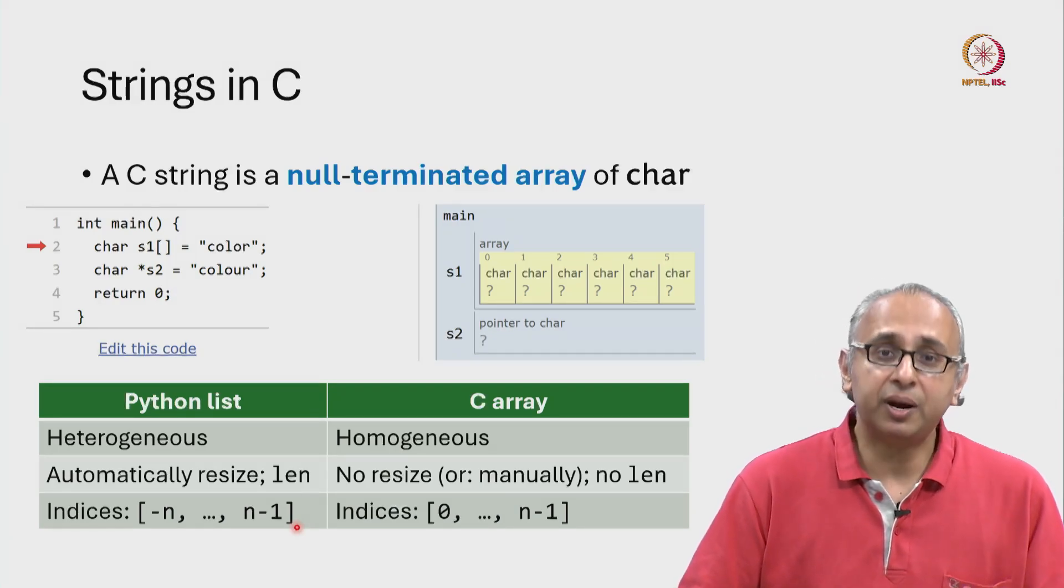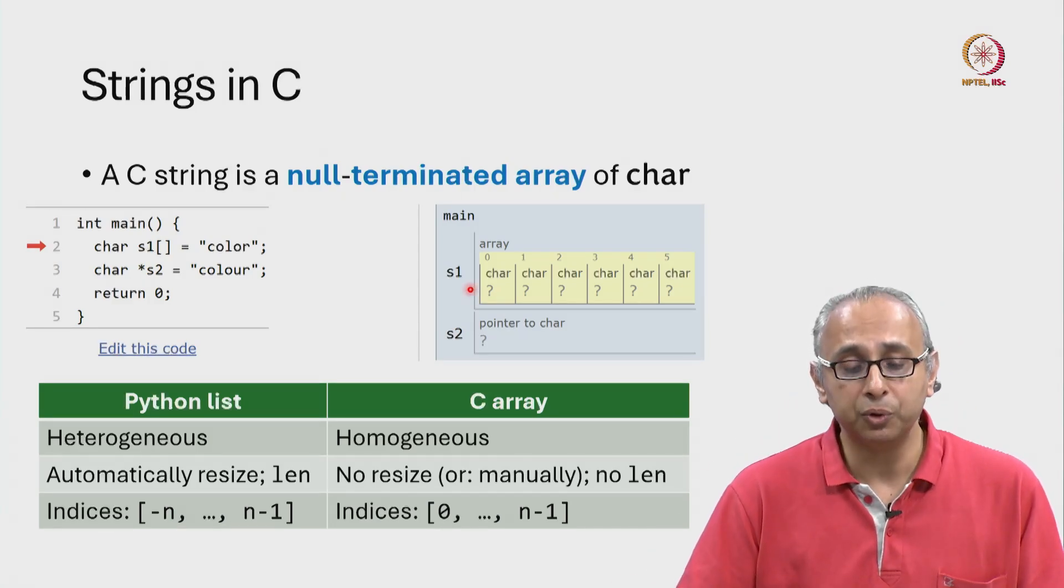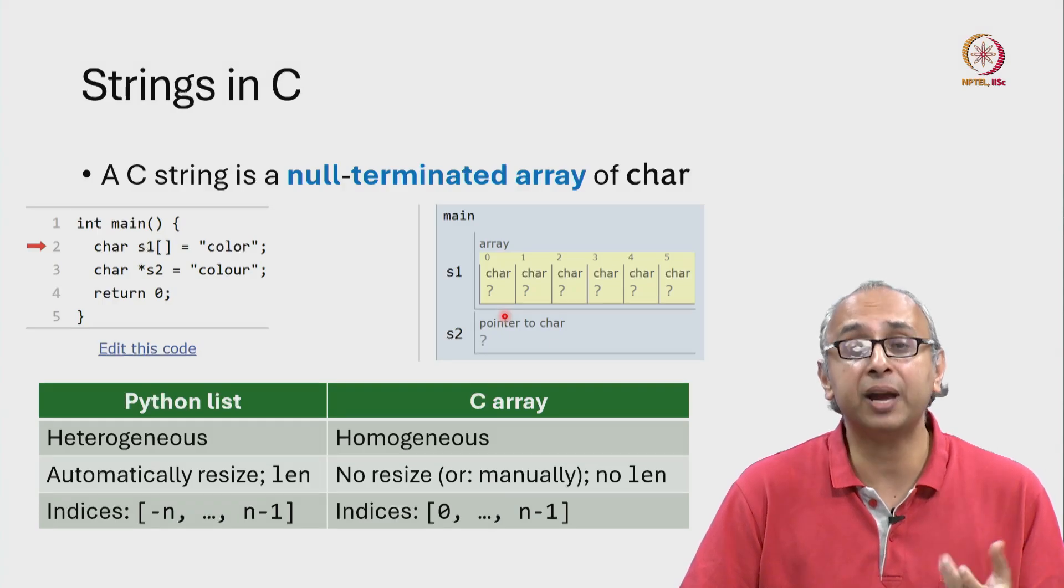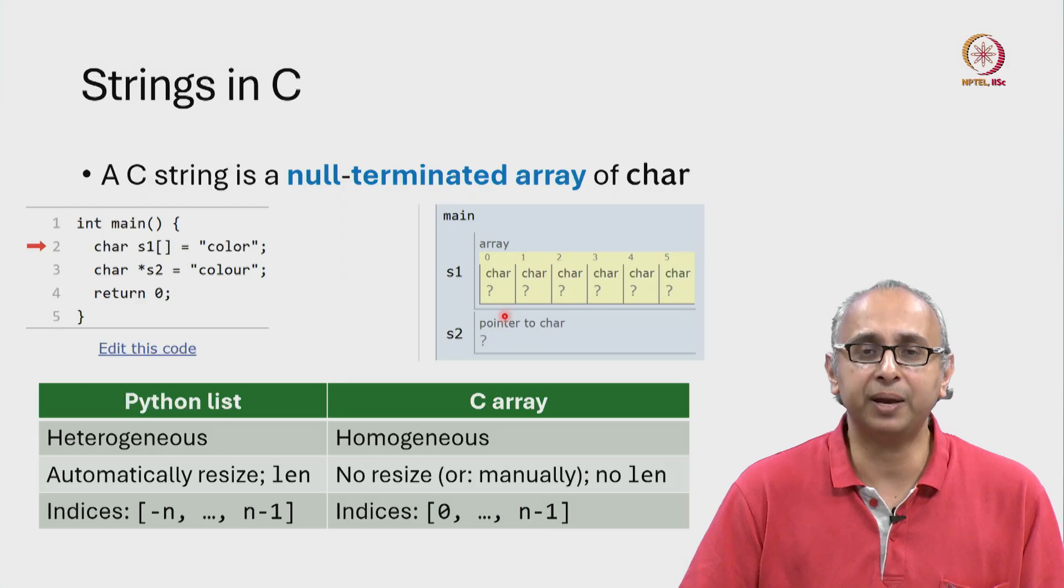But of course there are similarities. We can say s1 square bracket 0 to refer to the first letter or the letter at index 0 in a string just like we did in Python.